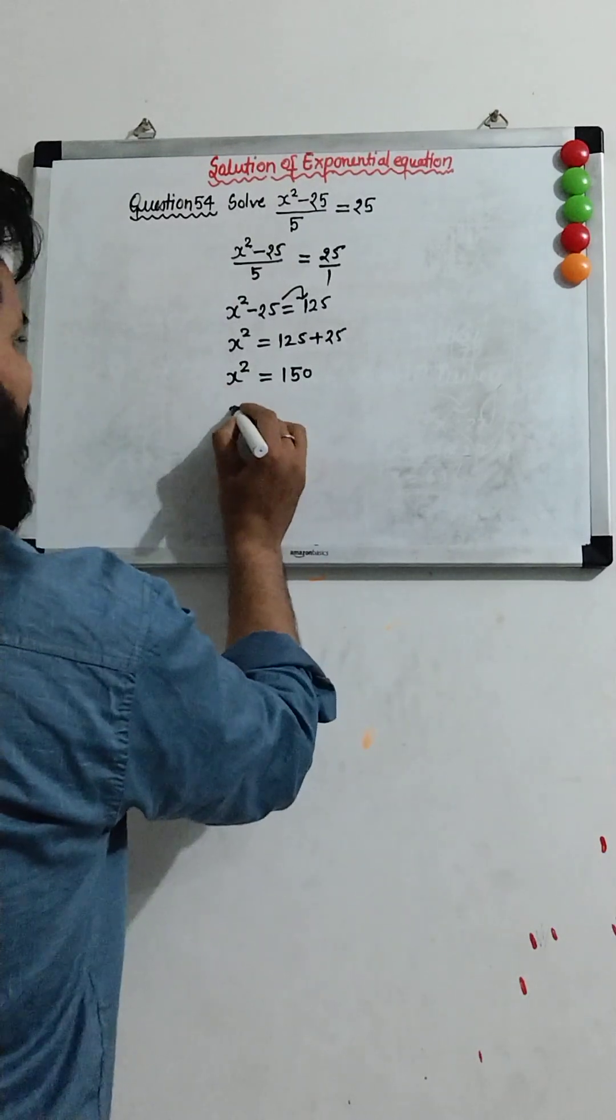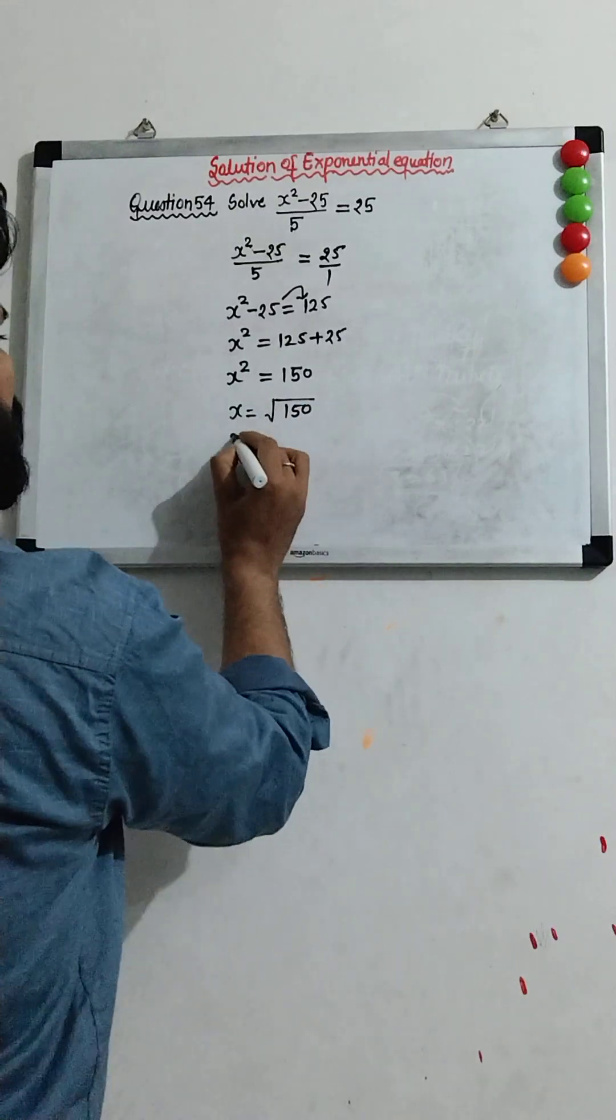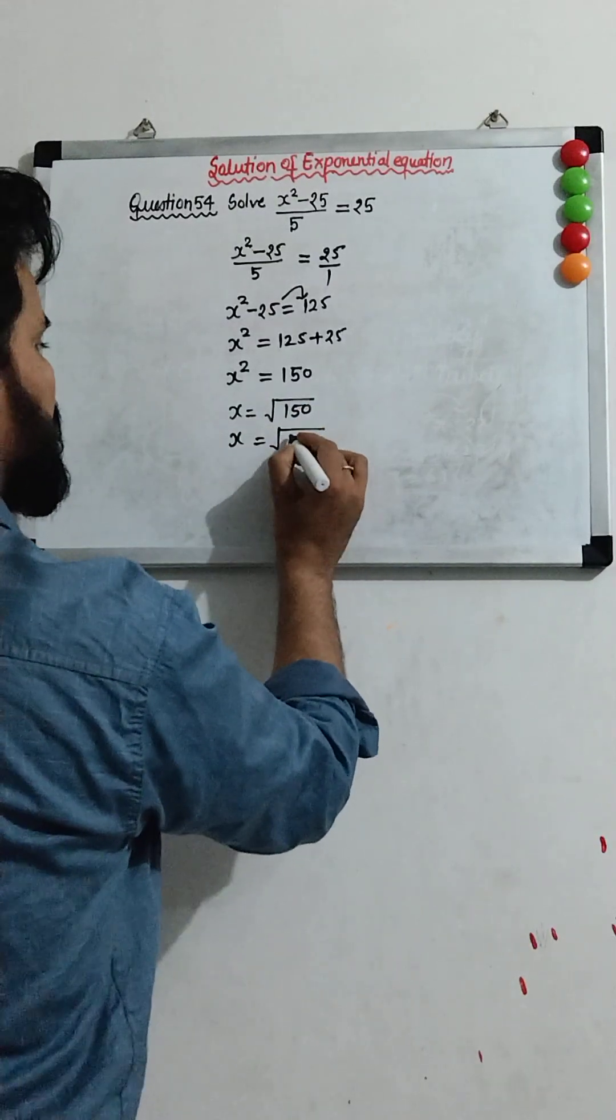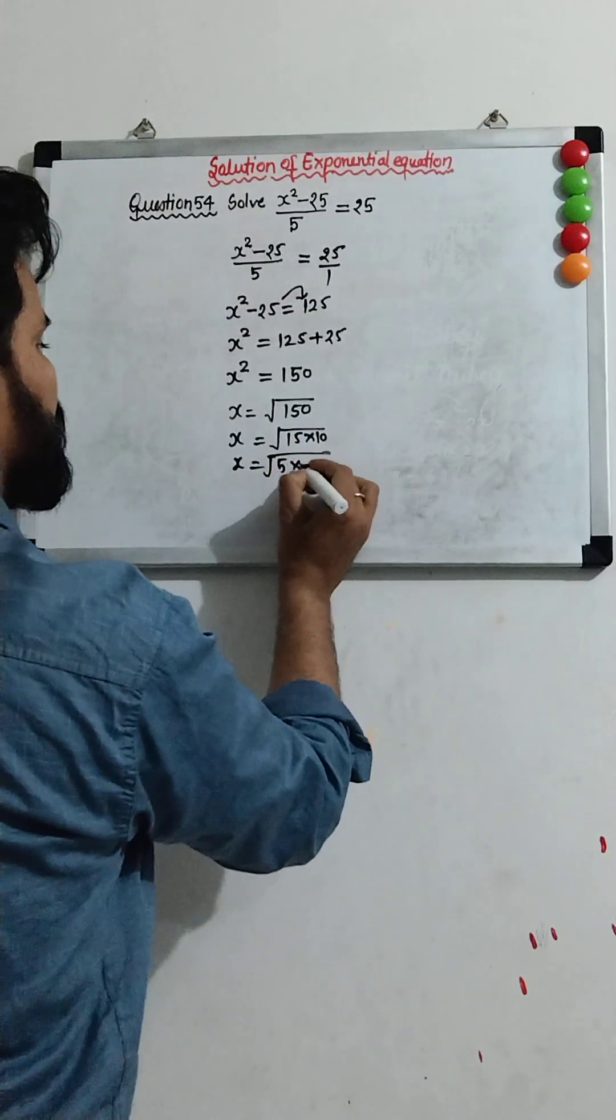So x will be the square root of 150. 150 means 15 × 10, and 15 means 5 × 3.